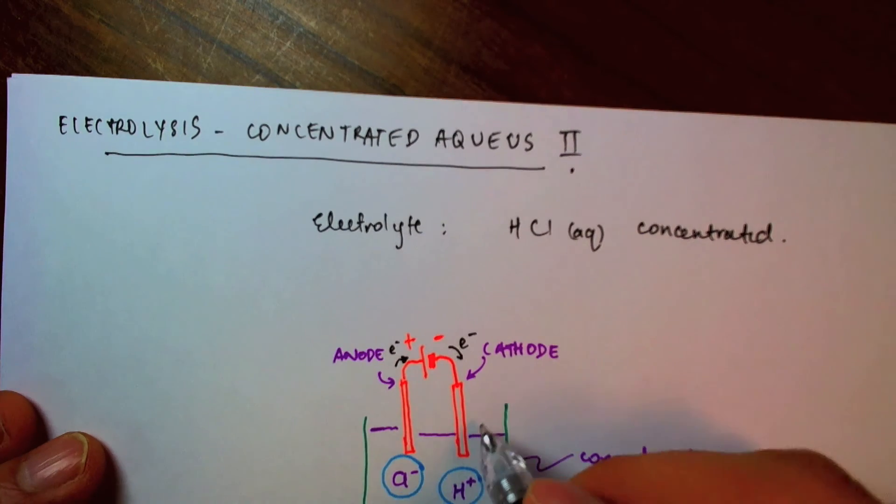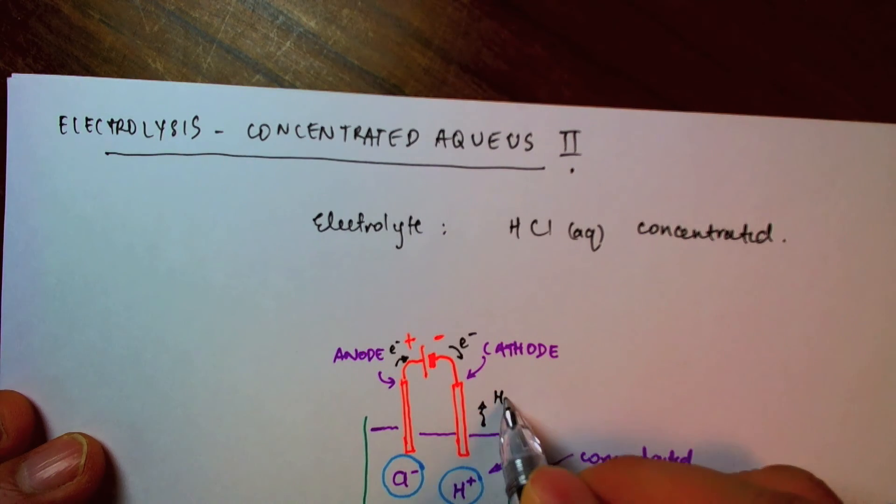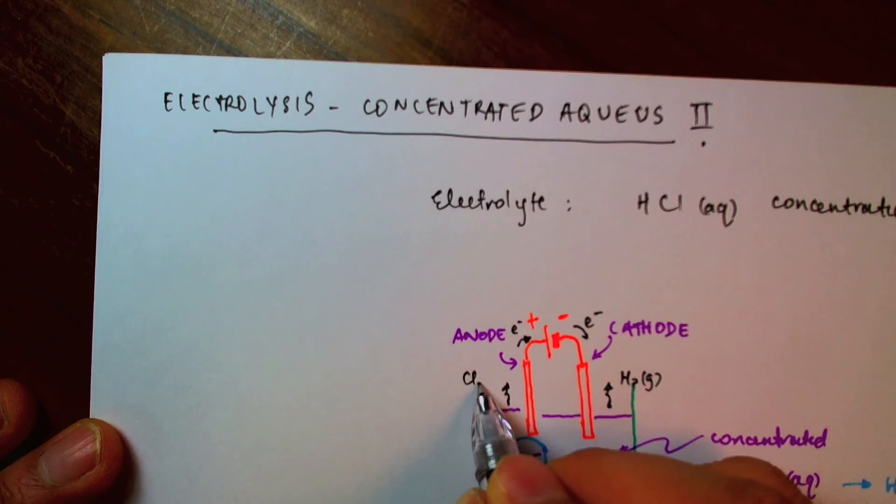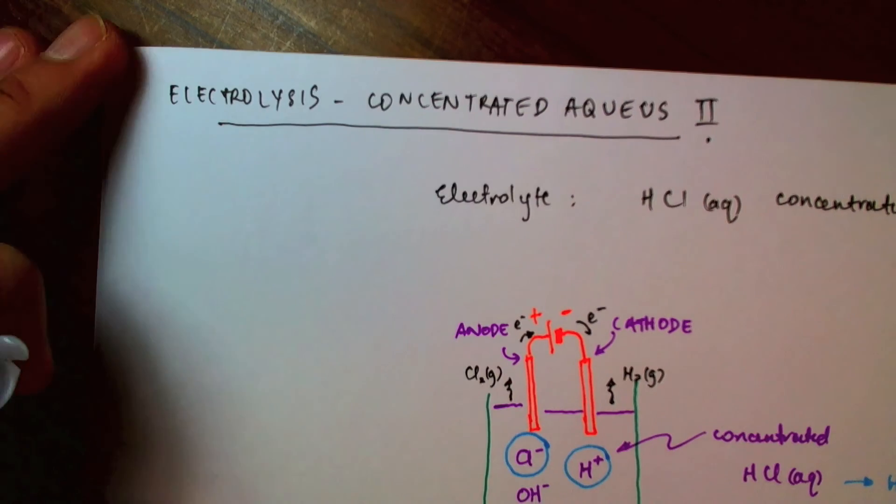Let's just show hydrogen gas being discharged here at the cathode and chlorine gas being discharged here at the anode.